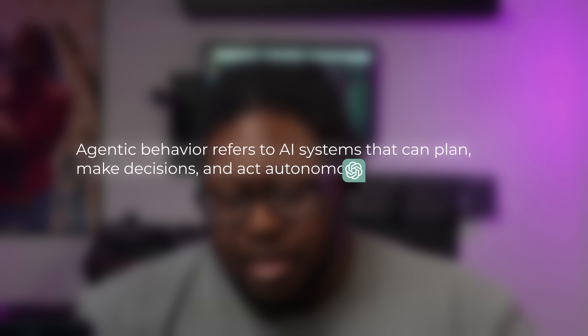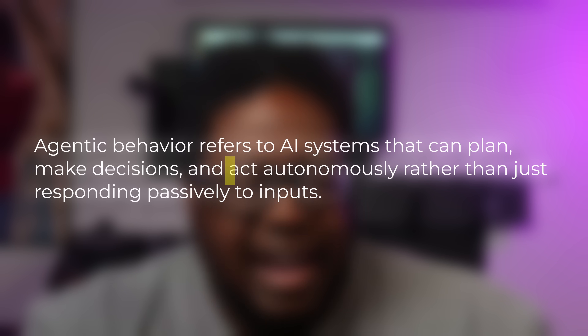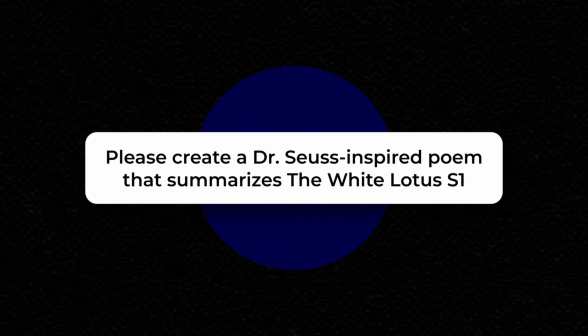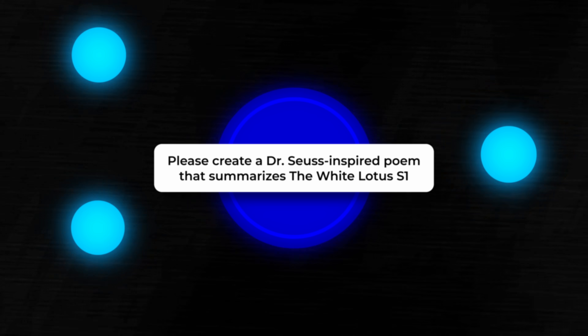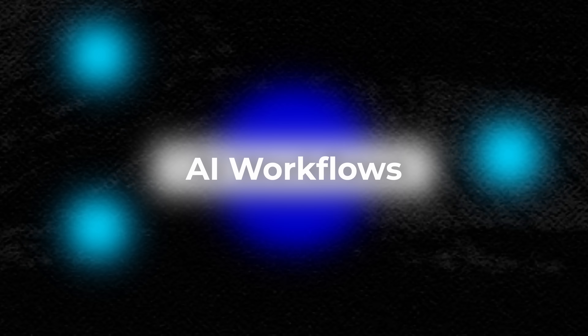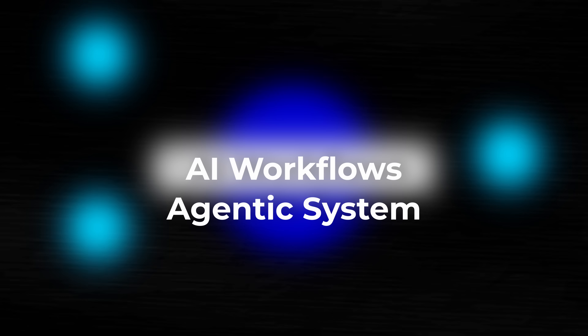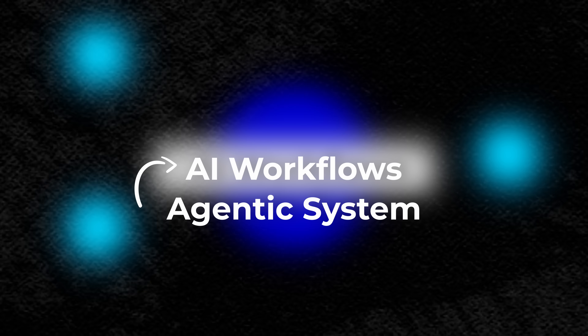Let's ask AI what agentic is. In AI, agentic behavior refers to AI systems that can plan, make decisions, and act autonomously rather than just responding passively to inputs. The key part I want to highlight is 'act autonomously.' Currently when we work with AI, we give it a prompt and it acts in accordance with the context it has. In sophisticated workflows, AI may even call one or more other AI systems — these are what we refer to as AI workflows. Every agentic system is secretly an AI workflow, but a rather sophisticated one — though not the other way around. What separates AI agents from regular AI workflows is the feedback loop, which lets the AI consistently adjust its actions to reach a desired goal.